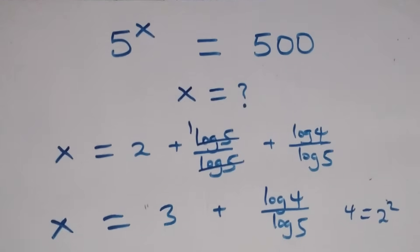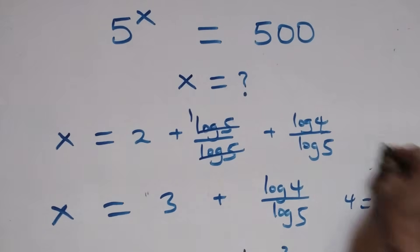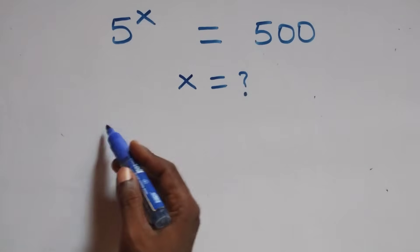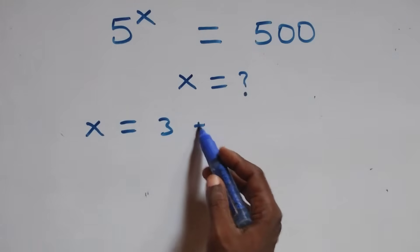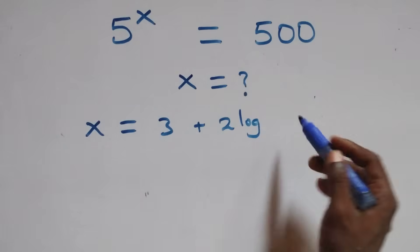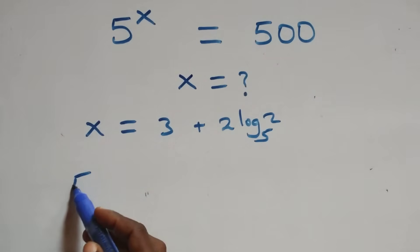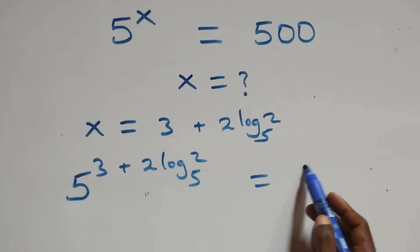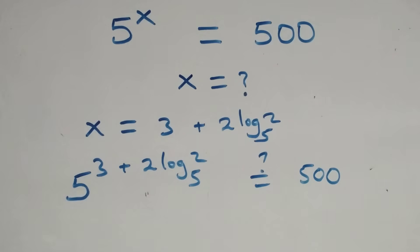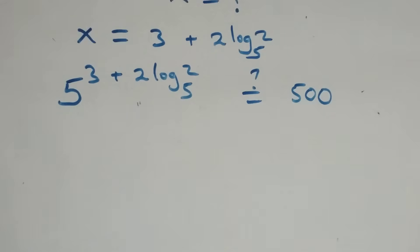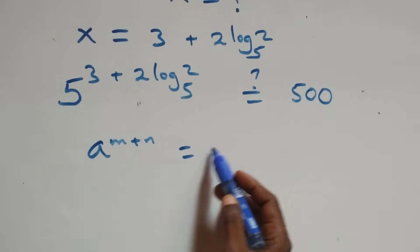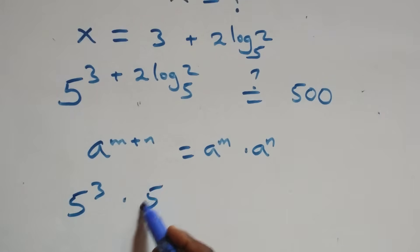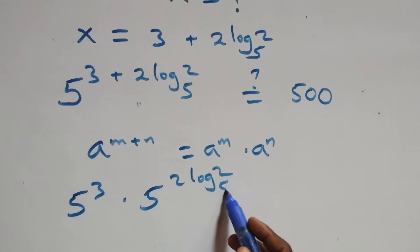Let's check if this satisfies the given problem. We substitute the value x equals 3 plus 2 log₂ base 5 back in, and we get 5 raised to the power of 3 plus 2 log 2 over log 5. Is this equal to 500?